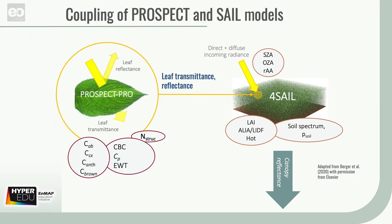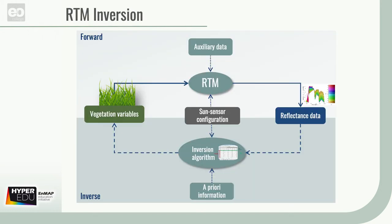Interestingly, leaf models such as PROSPECT and canopy models such as SAIL can be coupled. Now, for retrieval purposes, we are interested in the RTM input variables and the reflectance signal measured by imaging spectroscopy sensors. Hence, model inversion must be performed.